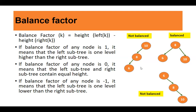Remember, a leaf node's balance factor is always zero, because it does not have any left side or right side. Now looking at another tree — this tree is also imbalanced. Why? It does not have any right side, but the height of its right subtree is two and the height of its left subtree is zero. So zero minus two gives minus two, which is not a valid balance factor.